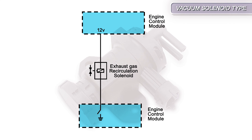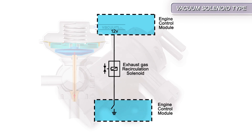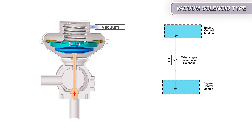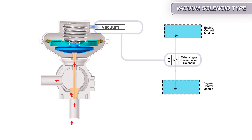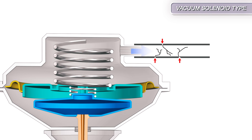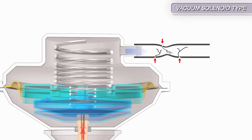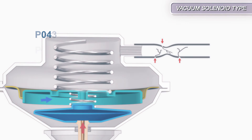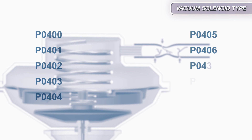This type of EGR system uses an ECM controlled vacuum solenoid. Vacuum is used to control the operation of a diaphragm, and the vacuum supply is regulated by the solenoid. Any vacuum leaks or vacuum supply blockages will not allow the EGR diaphragm to operate correctly. This will result in EGR flow DTCs.